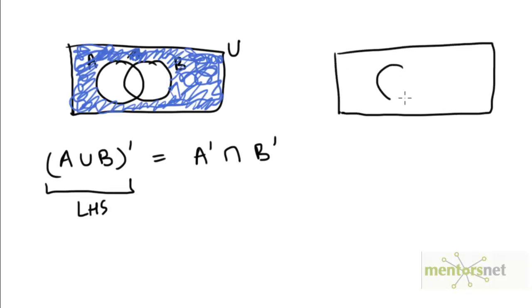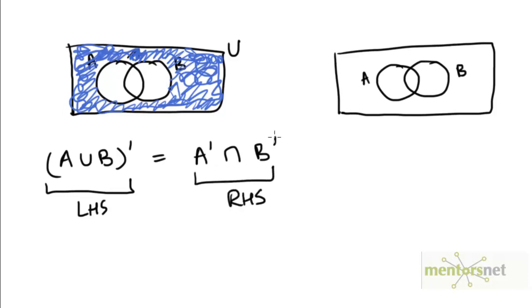Let's use another Venn diagram to pinpoint what the set on the right hand side is. A complement would be everything outside of the circle representing A. There are two regions outside of the circle A. The first region is outside of both circles A and B, and the second region is this green region which is outside of A but inside of the circle representing B. So regions 1 and 2 together make up the set A complement.